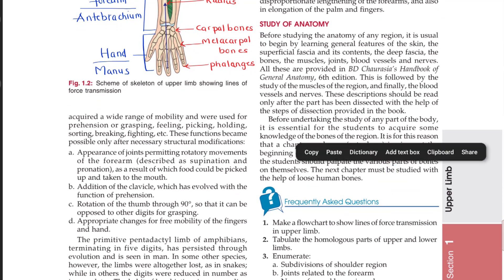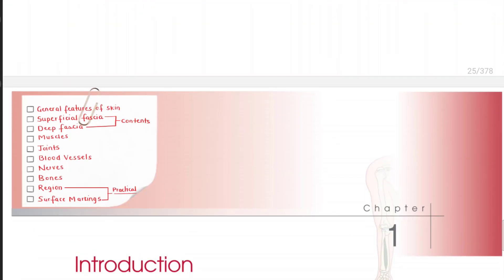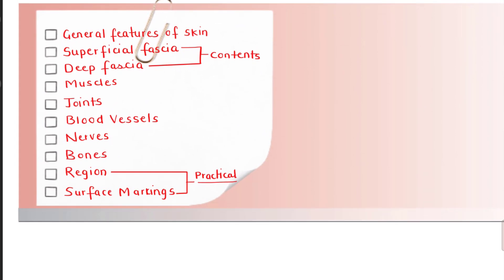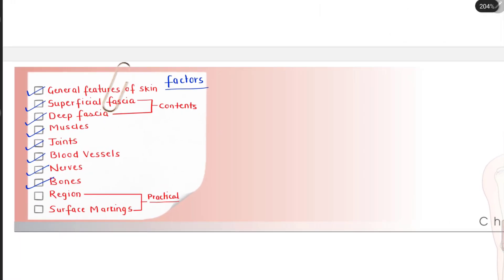This is important: how to study anatomy. Whenever you're studying any region or part of the body, you need to study it with reference to the general features of the skin, superficial fascia and its contents, deep fascia and its contents, muscles, joints, blood vessels, nerves, and bones. All these factors must be considered when writing your answer. For practical purposes, you will need region and surface marking for dissection.